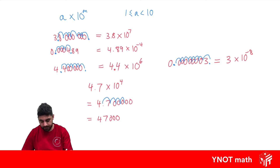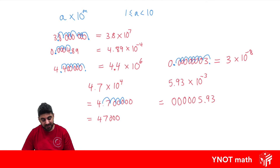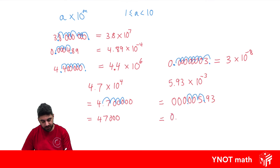Let's look at one more: 5.93 times 10 to the minus 3. This time we're getting a small number, so when we write it in expanded form we write some zeros before our digits. We need to move the decimal place to the left — not the right — because we have a negative power, and we move it three times: 1, 2, 3. The decimal ends up giving us 0.00593.